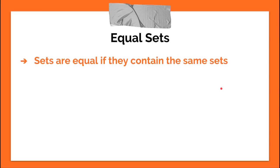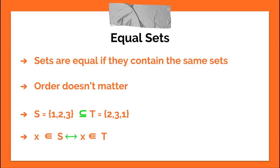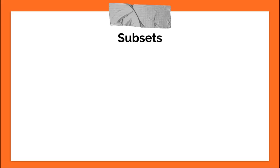Sets are equal if they contain the exact same elements. And order doesn't matter. So if S equals one, two, and three, and T equals two, three, and one, S and T are still equal sets. And if sets are equal, remember by conditionals from intro to propositional logic, X is an element of S if and only if X is an element of T.